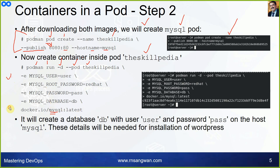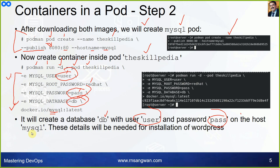The MySQL image provides environment variables you can pass: `MYSQL_USER`, `ROOT_PASSWORD`, `MYSQL_PASSWORD`, and `MYSQL_DATABASE`. Passing these will set your username, password, and create a database. It creates a database `db`, a user named `user`, and password `pass` on the host `mysql`. These details will be needed for the WordPress installation, so take note of them. Following these instructions carefully should work without any problem.